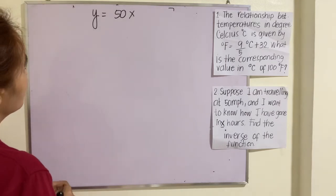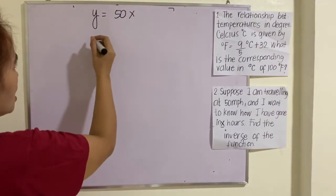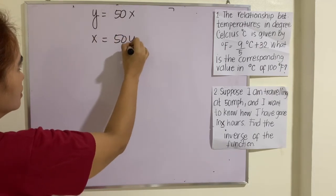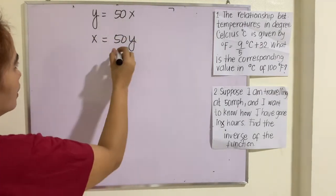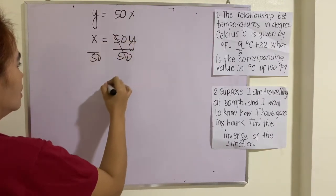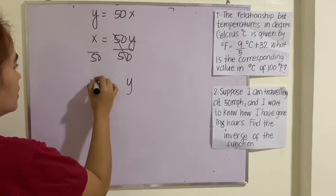How do we do that? We interchange X and Y. That will be X = 50Y. Then you solve for Y. That will be Y = X/50.